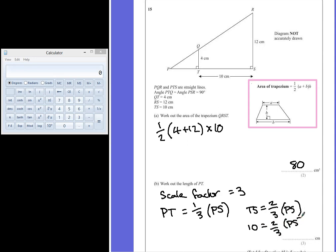...then 1 third must be half of this value. Therefore PT is equal to 5cm. That would make the entire triangle from P to S 15cm long, which is 3 times bigger than this. So once again that matches our scale factor.